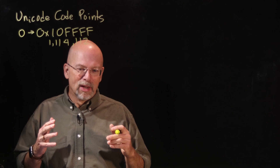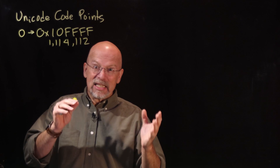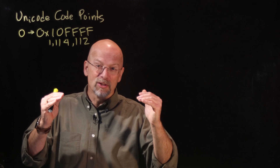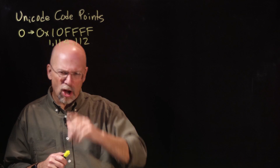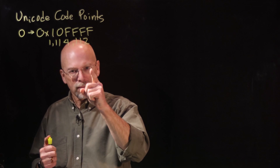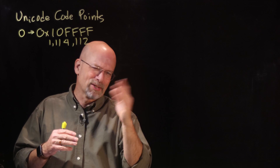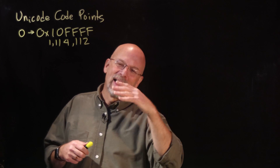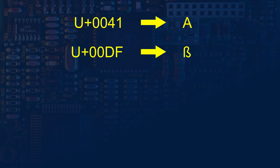One important feature is that the first 128 Unicode code points map directly from ASCII — there's a very important reason for this related to UTF-8 backwards compatibility. Extended ASCII's one-byte patterns starting with a one were discarded and reassigned. Unicode code points cover Latin alphabet characters like the letter A, characters from other languages such as the eszett and eñe, Egyptian hieroglyphs, and even emojis.